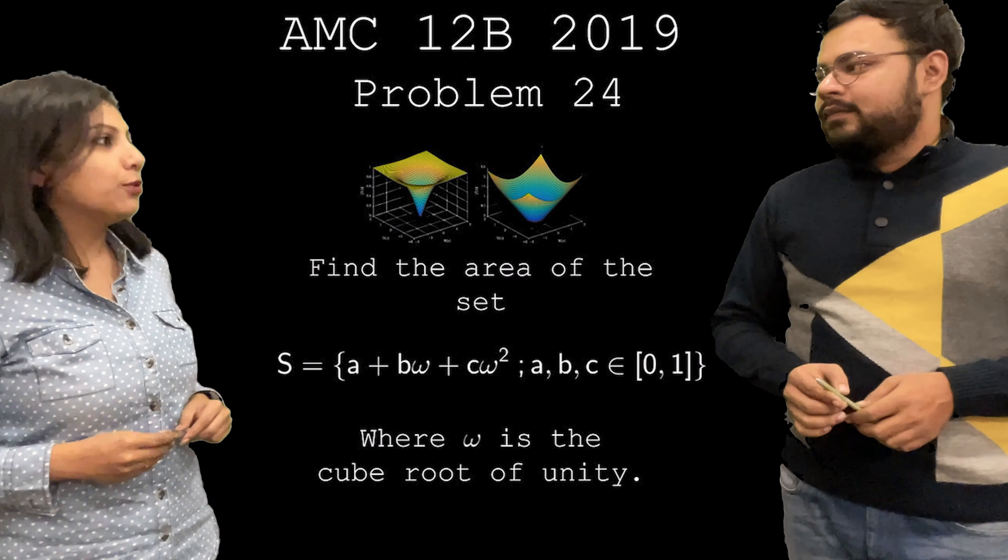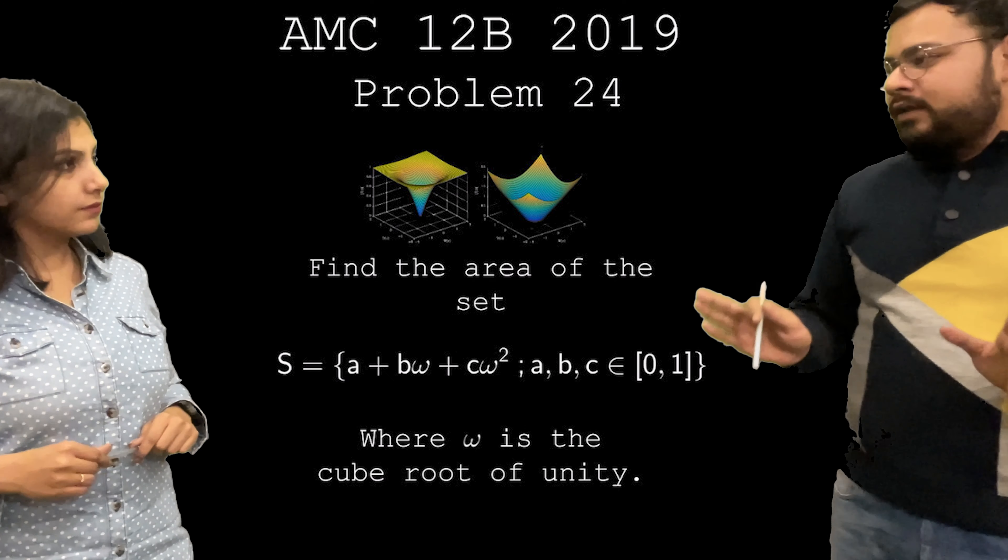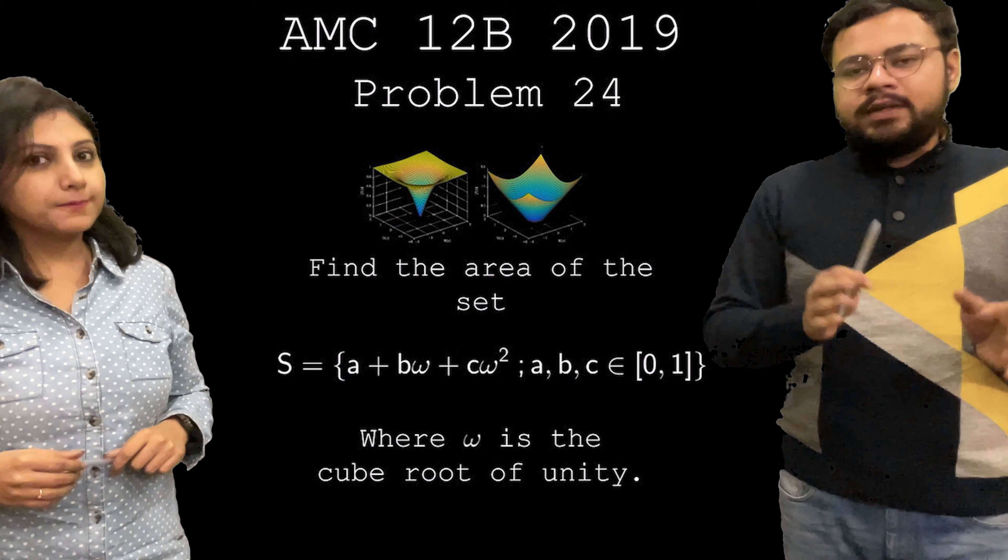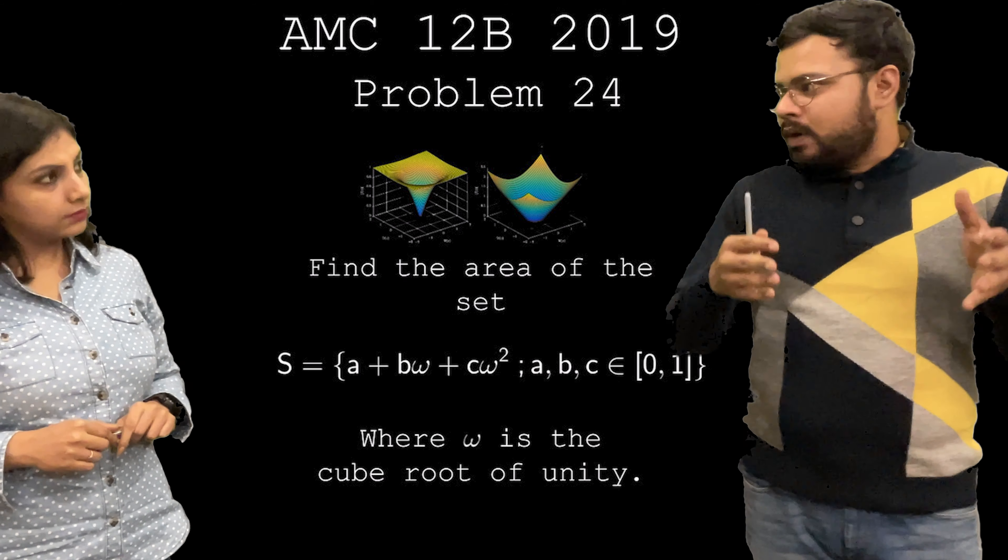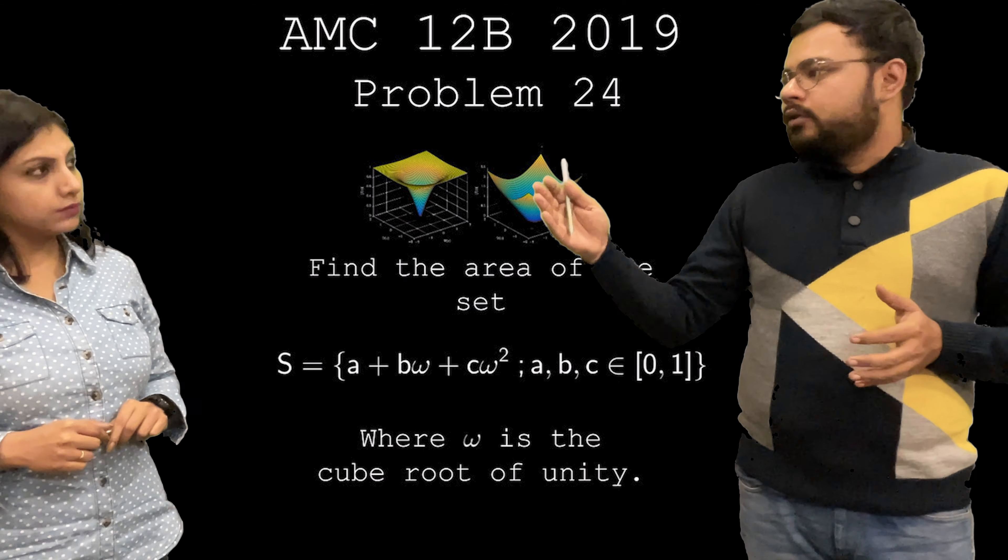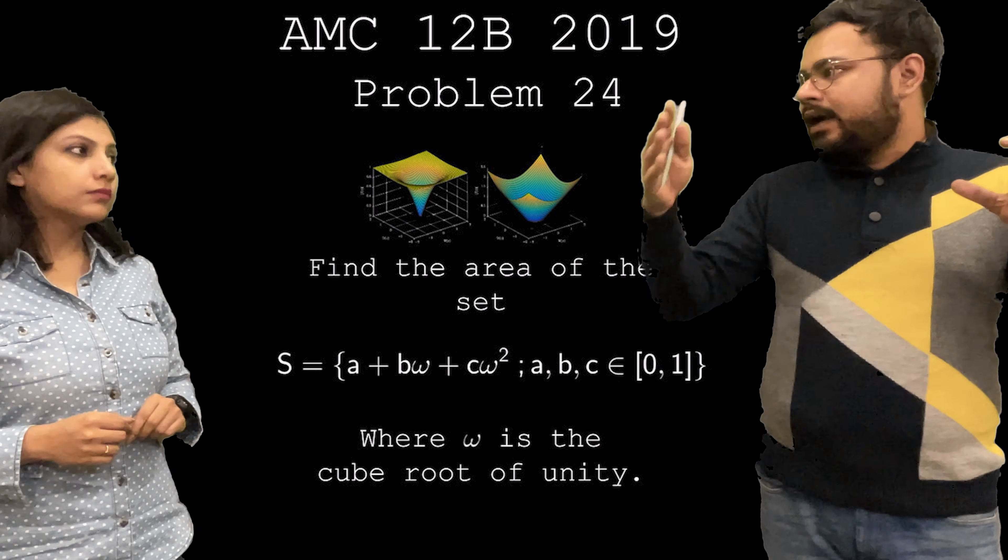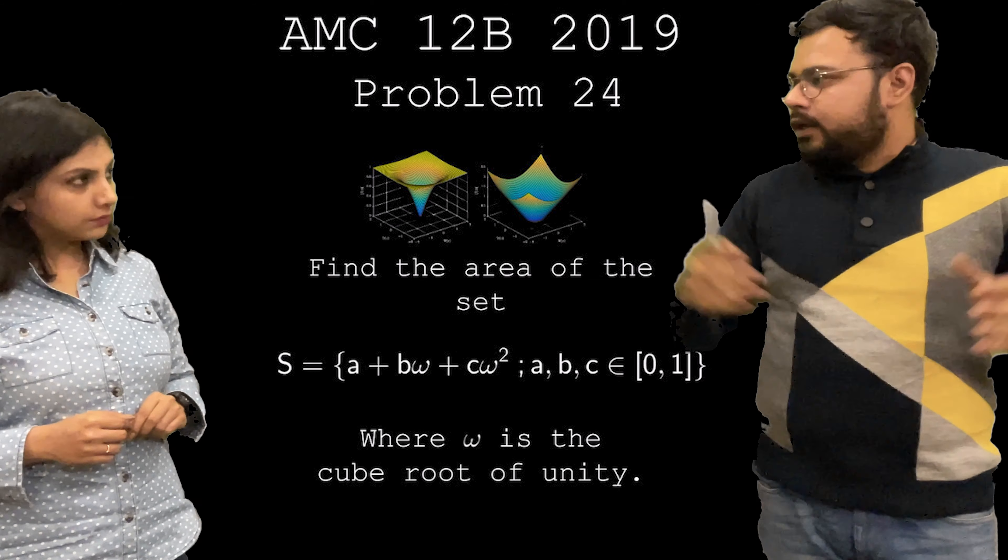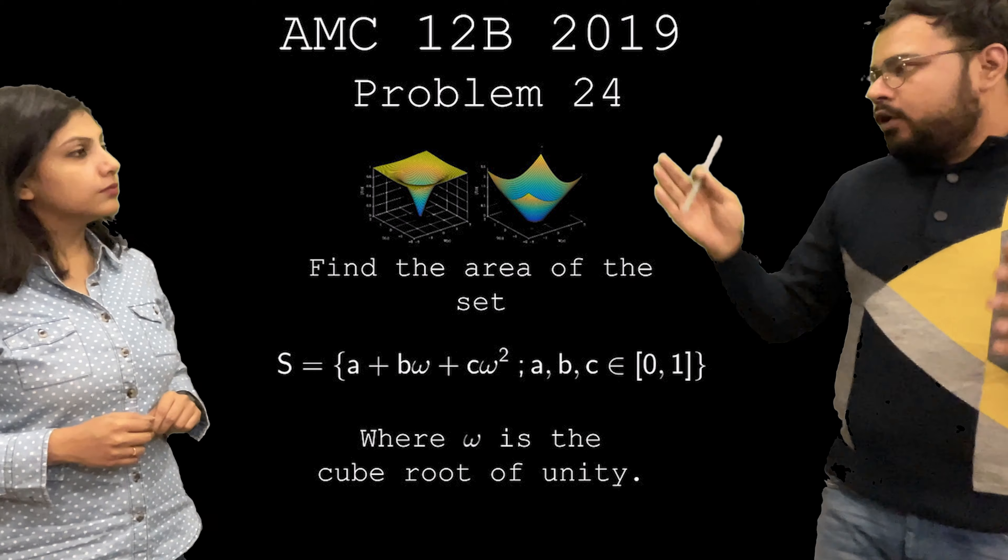Shomik. Let's get back to the problem again. Yeah. So we now know all the required concepts to solve the problem. So before we proceed, I want you to pause the video and give the problem a try. So each element of the given set looks like a into one plus b into omega plus c into omega square. So we have a constant multiplied by the cube roots of unity. We have three constants and they are multiplied by the cube roots of unity and then we added them.